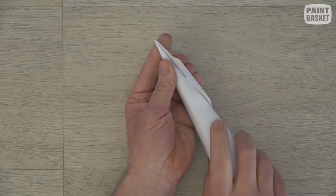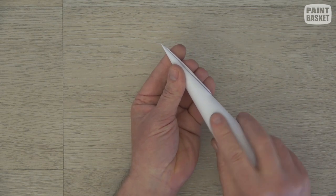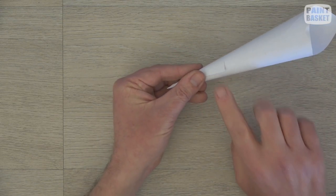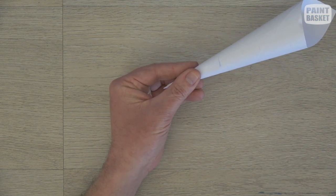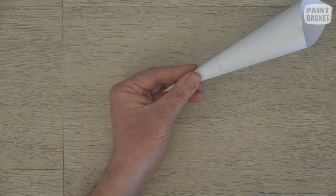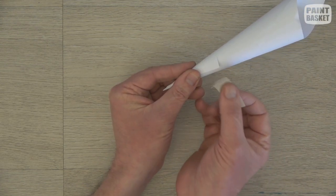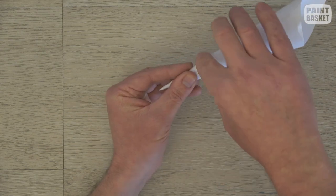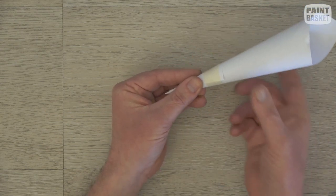Once you've got the point that you want, just finish rolling this guy up so that that tip over there is flat against the blending stump itself. Take a piece of masking tape and just lock him in place.